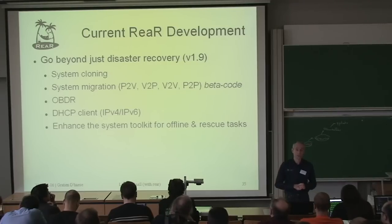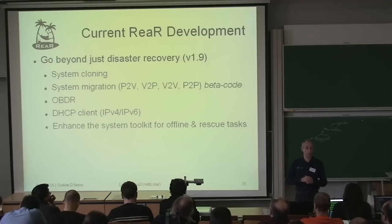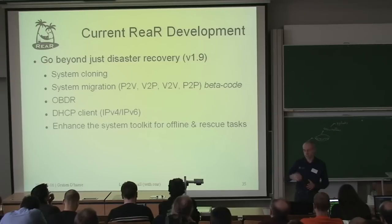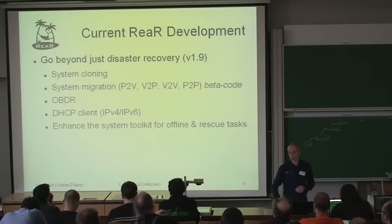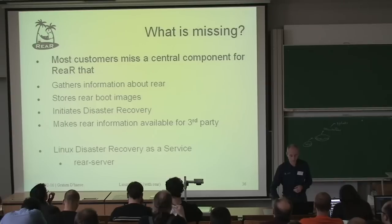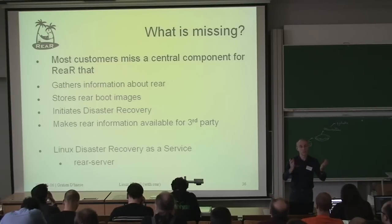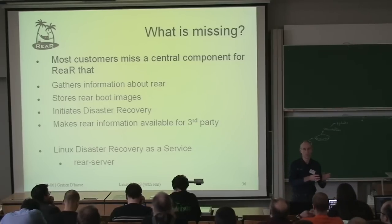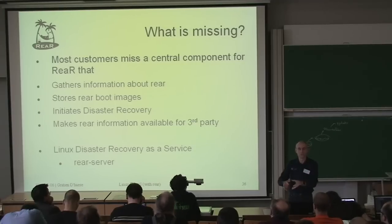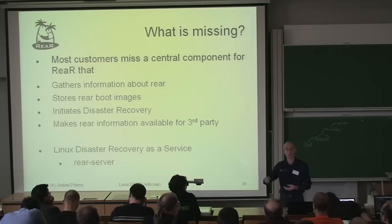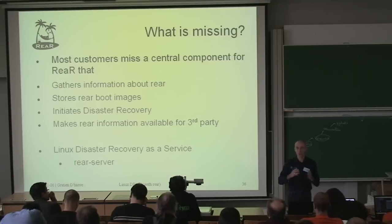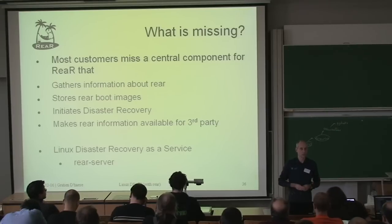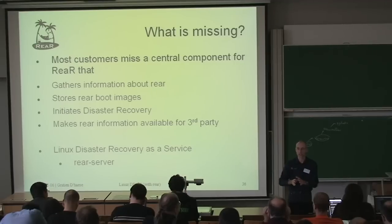What is still missing is a central point of storage — not just for data via NAS, but for rescue images and configuration files. Currently you do it locally, put it on USB or tape, and manually copy to a central point. These things could be automated. That is what we are working on as a future step: disaster recovery as a service, called ReaR Server — collecting rescue images and configuration files to a central point to build a service around it.